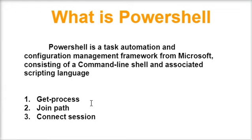The verb Get is used to retrieve data — we can retrieve the process. The verb Join-Path will join multiple strings into a single path string. We can also use Connect to get a connection and connect our account.